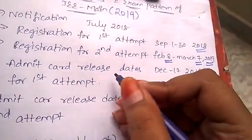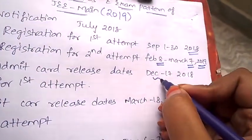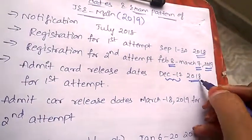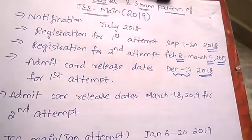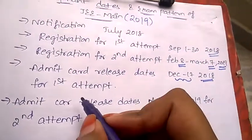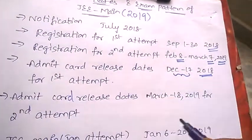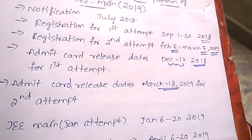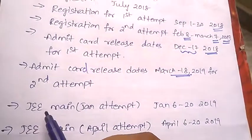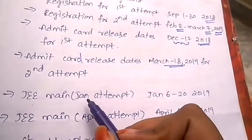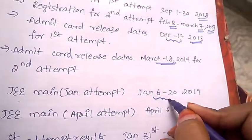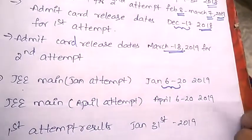Admit card release dates will be on December 17th of the year 2018 for the first attempt, and for second attempt, admit card will be released on March 18th of 2019. JEE Mains for January attempt, the exam will be between January 6th to 20th of 2019.